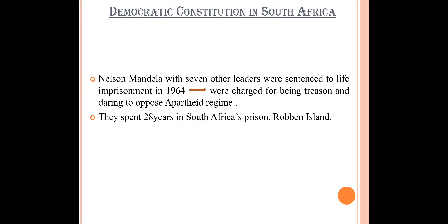Why did people in South Africa struggle against apartheid? Basically there were three skin-color groups found in South Africa: white, black, and colored. The whites were those who came from Britain. The blacks were the natives of South Africa, and the colored were Indian or other people who worked in South Africa. Discrimination was seen against the colored and black groups, and these two collectively were known as non-whites.